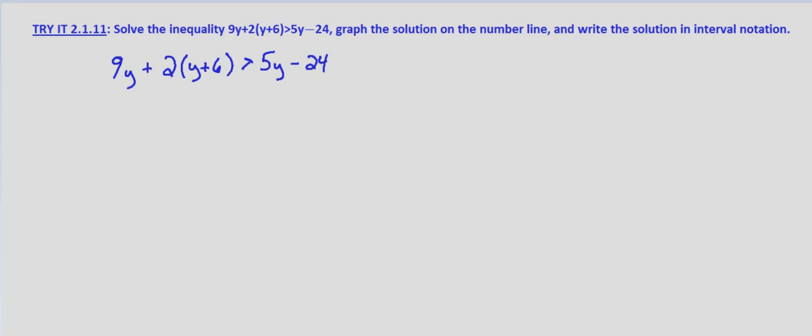The steps are exactly the same as if we were solving an equation. The only difference is that if we multiply or divide either side by a negative value, we're going to reverse the direction of the inequality symbol.